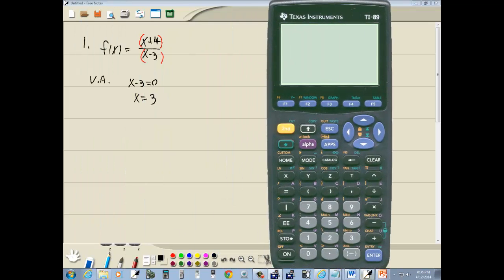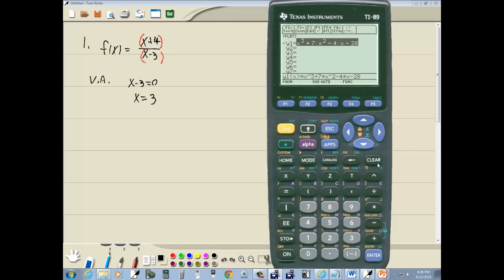Okay, so let's go graph this. Do diamond F1 for y equals. I'm going to up arrow to y1. I'll press clear to clear out what was there. You have beginning parentheses x+4, closing parentheses, divided by beginning parentheses x-3, and then closing parentheses. And then press enter.